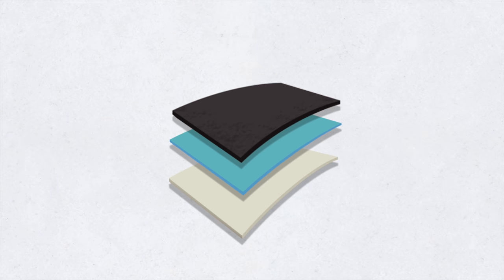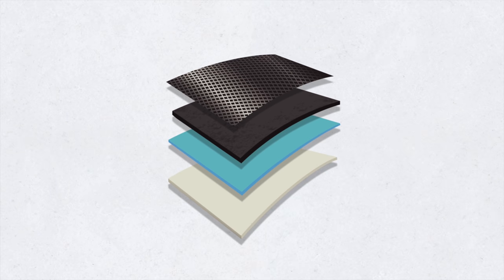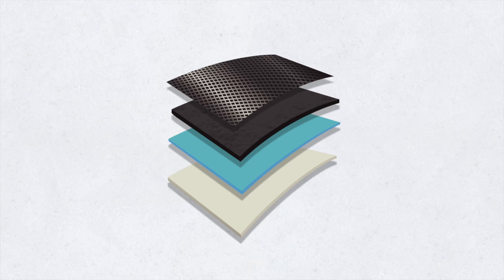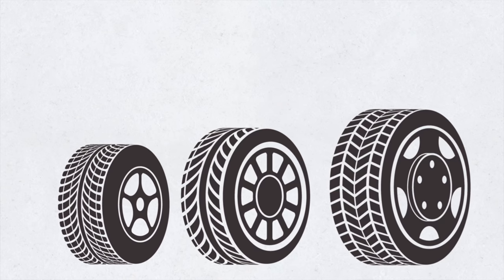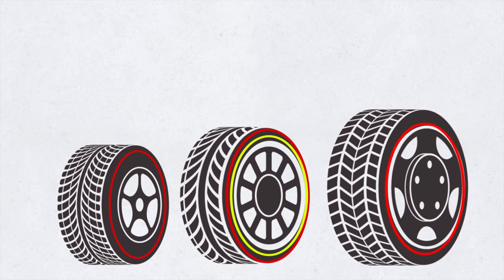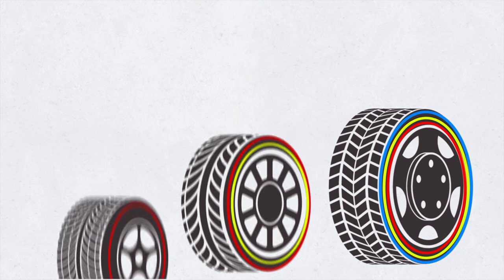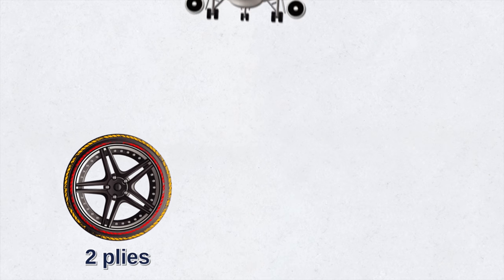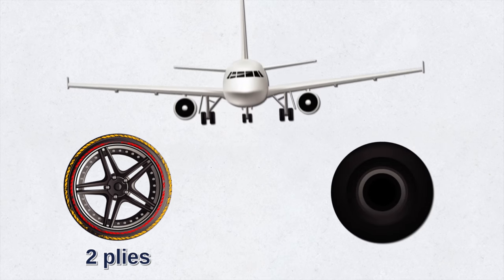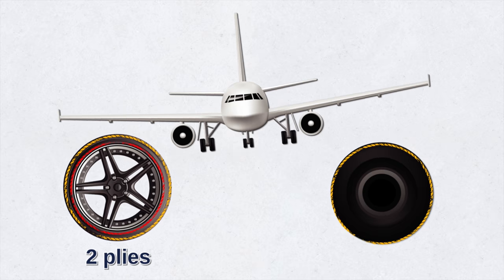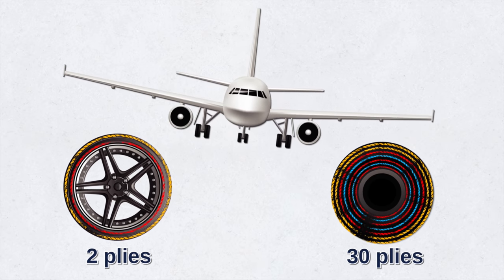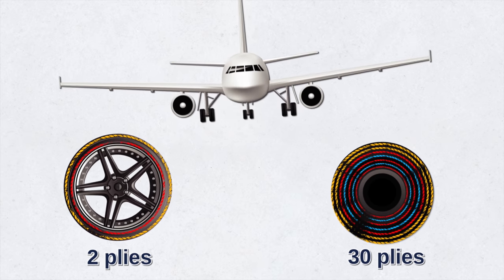Car tires can be classified into two categories based on tire construction and features. To understand this, let's talk about plies. Plies are the layers of different fabric that make up a tire. The most common ply fabric is polyester cord. A tire's strength is often described by the number of plies it has. Most cars have two plies.